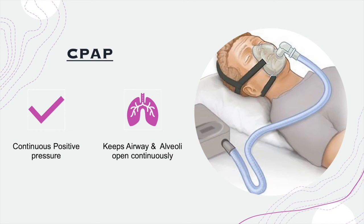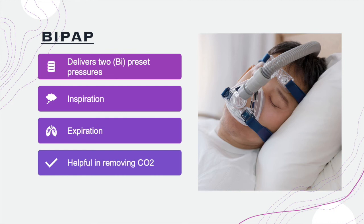BiPAP stands for bi-level positive airway pressure. Instead of one continuous pressure, it delivers two preset pressures — one for inspiration and one for expiration. This mode is very helpful for removing carbon dioxide. For example, if a patient's blood gas shows high CO2, we can increase the respiratory rate to lower it; if CO2 is too low and the pH is alkalotic, we can slow the rate to retain CO2 and bring the pH back down.